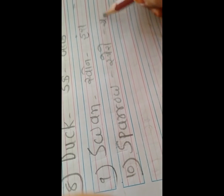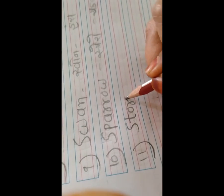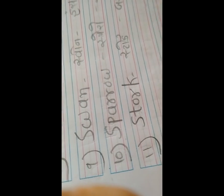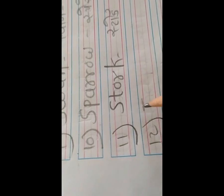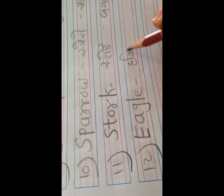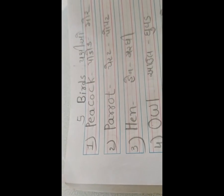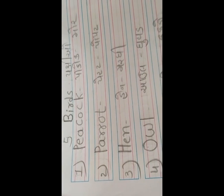એના પછી આવે છે સ્પેરો - S-P-A-R-R-O-W - સ્પેરો એટલે ચકલી. એના પછી આવે છે સ્ટોર્ક - S-T-O-R-K - સ્ટોર્ક એટલે બગલું. અને લાસ્ટ આવે છે ઈગલ - એટલે ઘોરાડ. વિત્યાર્થી મીત્રો, છેલ્લો: તમારે આ રીતે ઇંગ્લિશ ની ફોર લાઈનમાં લખ્વાનું છે - બડ્સ એટ્લે પક્ષીઓ, પછી પીકોક એટલે મોર.